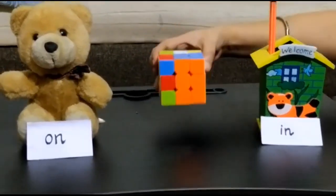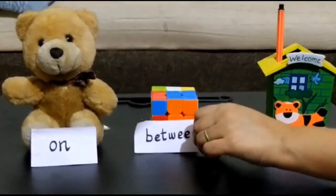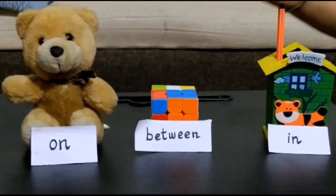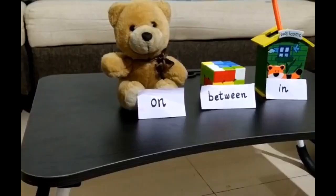Now, where is the cube placed? Can you see the cube? Between. It is between the teddy and the pen stand. So the word is between. Right? Between.